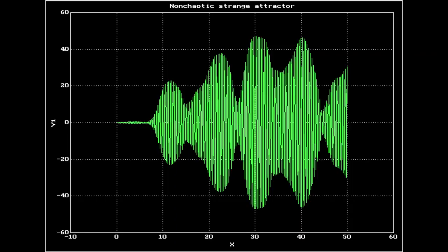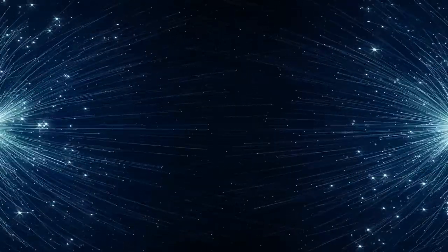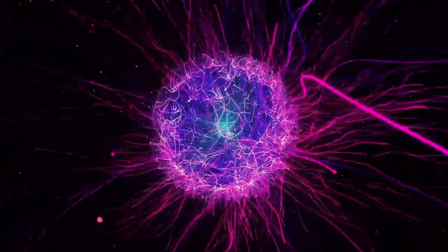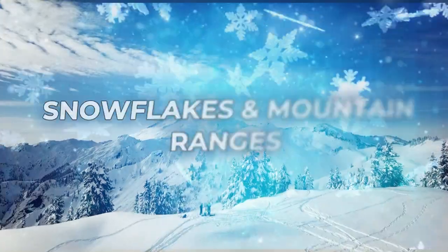Chaotic systems often exhibit stability influenced by attractors, with strange attractors being a notable type found in non-linear systems. These strange attractors demonstrate both stability and unpredictability, revealing intricate patterns within chaos. The concept of self-similarity, observed in natural phenomena like snowflakes and mountain ranges, underscores the fractal nature of chaotic systems.